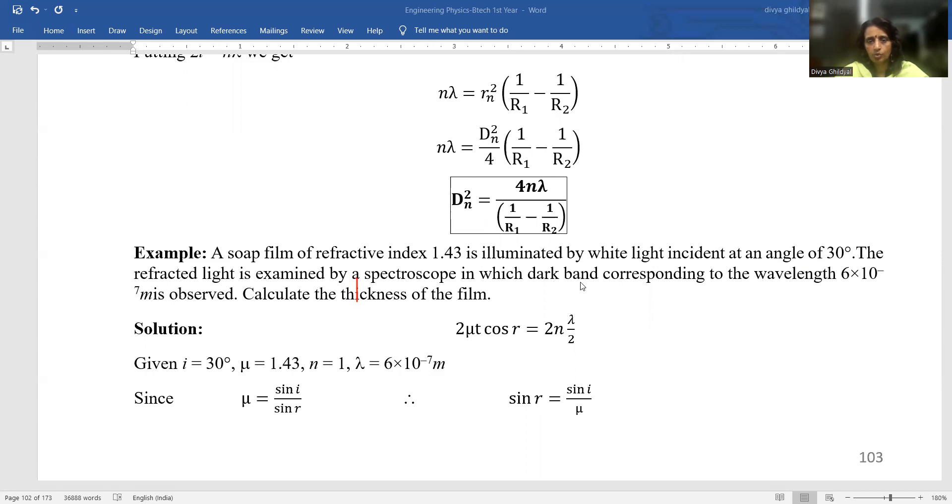The reflected light is examined by a spectroscope in which dark band corresponding to the wavelength 6×10⁻⁷ meter is observed. Find the thickness of the film.